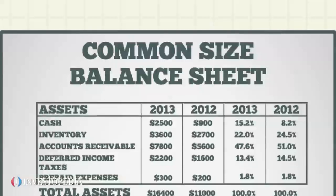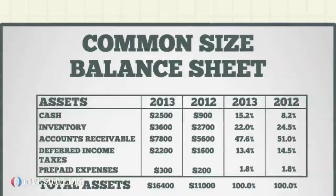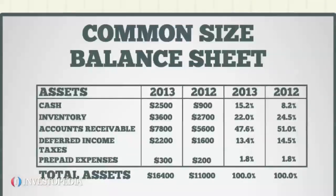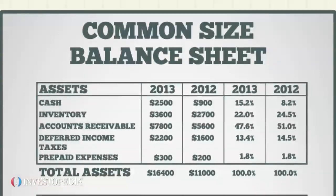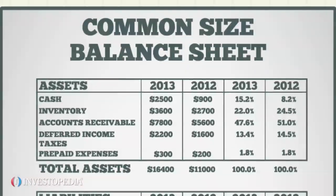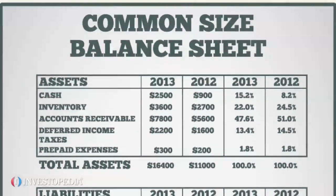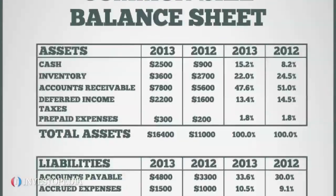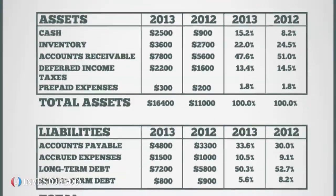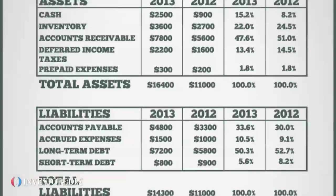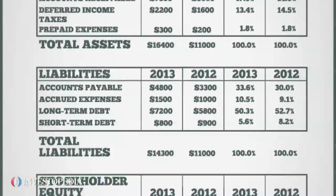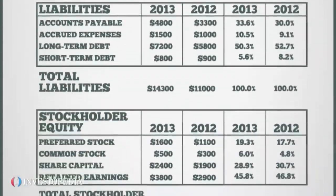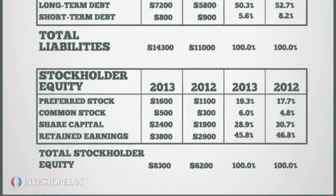The Common Size Balance Sheet not only displays the numeric value of all entries, it also shows the percentage of each entry relative to the total value of related entries. These entries are grouped under assets such as cash and deferred income taxes, liabilities such as accounts payable, accrued expenses and debts, and stockholder equity such as preferred and common stock and retained earnings.